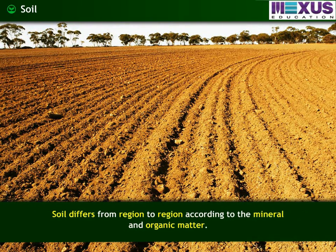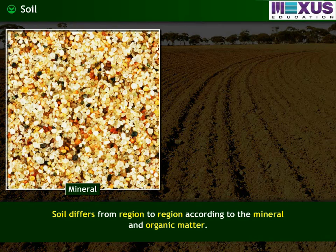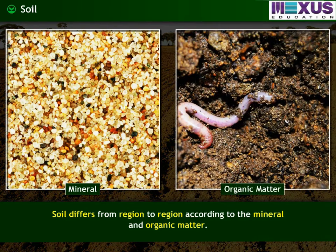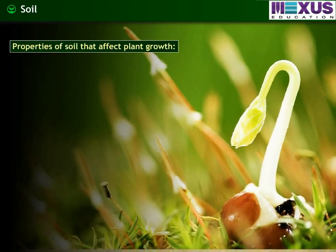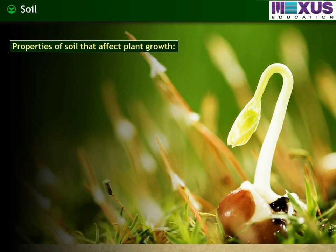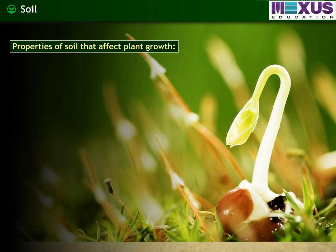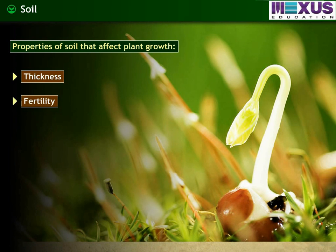Soil differs from region to region according to the mineral and organic matter. Some of the important properties of soil that influence the growth of plants are thickness of soil, its fertility, ability to drain water, etc.